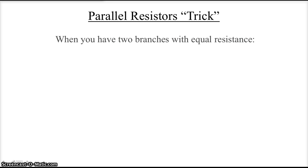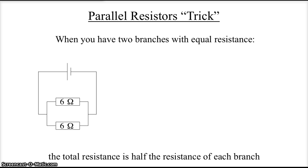There's a trick. Whenever you have two branches with equal resistance, the top and bottom branches each have 6 ohms. The total is half the resistance of each branch. You can replace this branch with a single resistor having half the resistance of each individual arm or branch. The math always works out for this to be true.